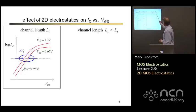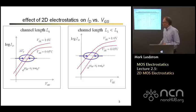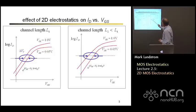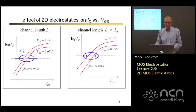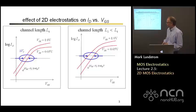Now let's look at a channel that is even shorter than channel length L1. If we have a shorter channel length, we might expect to see something like this. We'll see a larger shift, or a larger DIBL. We might even see the slope of that sub-threshold characteristic degrade and the slope become less steep. Those are a consequence of two dimensional electrostatics, and when we understand two dimensional electrostatics, we'll be able to understand what's going on.